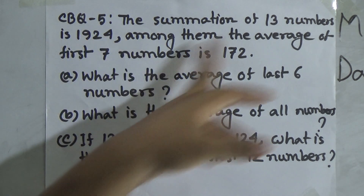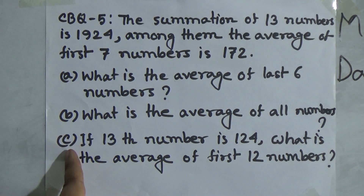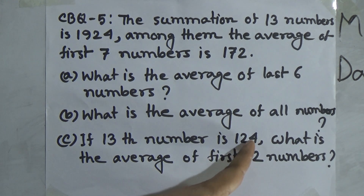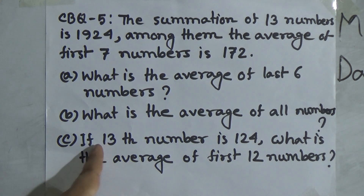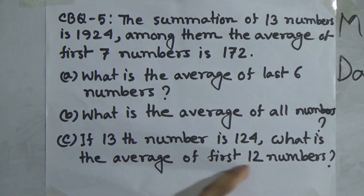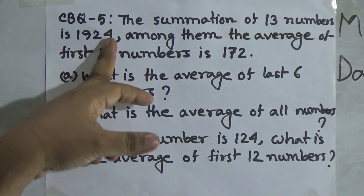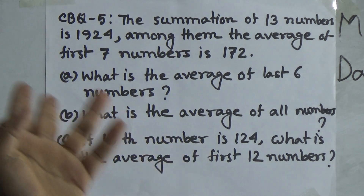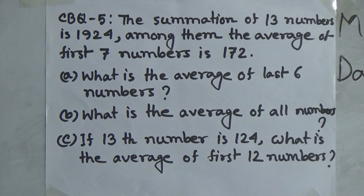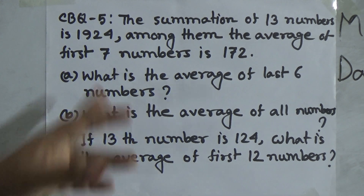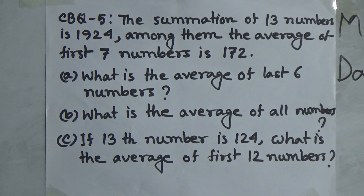If you divide 1924 by 13 you get the average of all numbers — that is question B. Question C: if the 13th number is 124, what is the average of the first 12 numbers? Notice: subtract the 13th number from the summation of 13 numbers to get the summation of the 12 numbers, then divide by 12 to get the average. Questions A, B and C are easy and you must solve them for SW and submit on 29th May 2021.